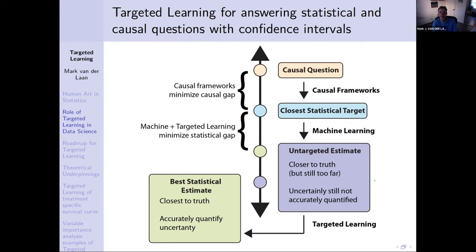Once you have that, you say: let's be realistic. We don't observe, for example, the potential outcomes under treatment and control — we only observe one of them. There's essentially some kind of missingness going on, and there might be all kinds of other issues: biased sampling, censoring, dropout, and so on. The question becomes: from the actual observed data experiment, can we even learn this quantity we care about — this quantity represented as a functional of the full data distribution? That's called an identification question.